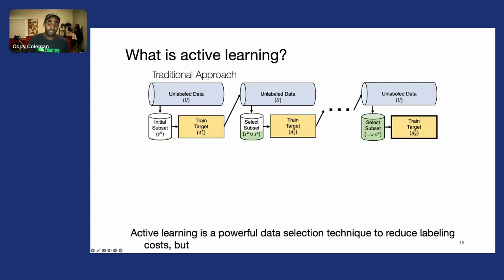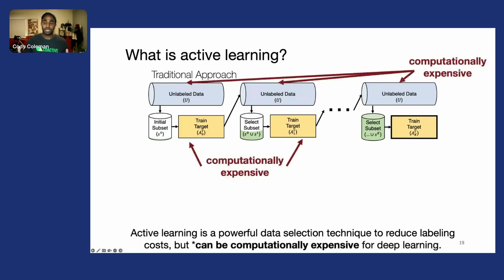Active learning is a really powerful data selection technique for reducing labeling costs. But when we think about deep learning and modern data workloads, it can be computationally expensive.